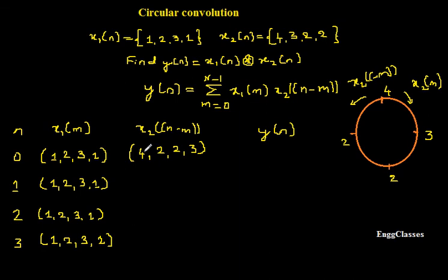This is the first sequence. Now I have got two sequences. To get y of n, I need to multiply these two term by term. Later, add all those things. First it is 1 into 4, I get 4, plus 2 into 2 which is 4 again, plus 3 into 2 which turns out to be 6, and lastly 1 into 3 it is 3. Add up all those things. It is 4 plus 4, 8 plus 6, 14 plus 3 turns out to be 17. This is the first sample.